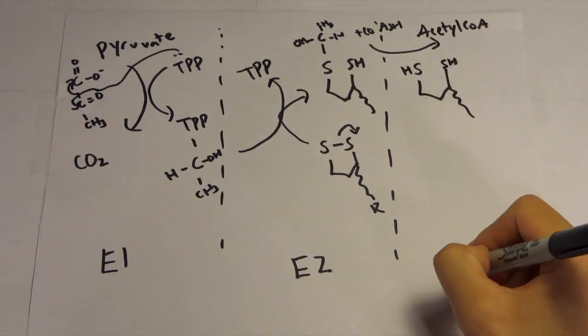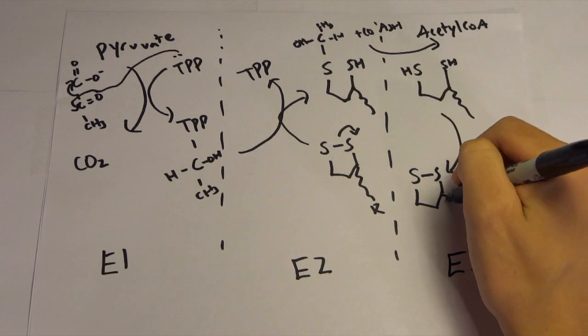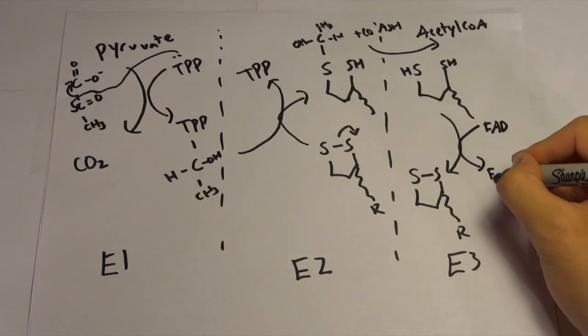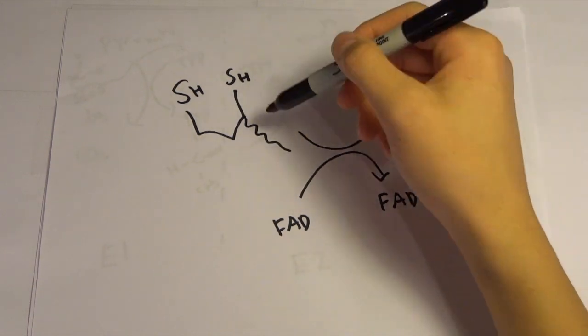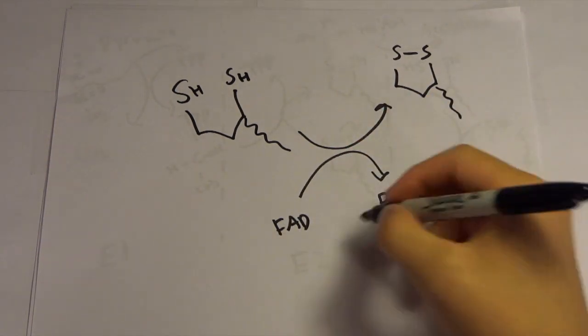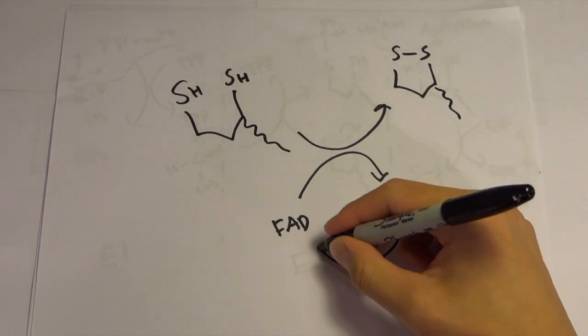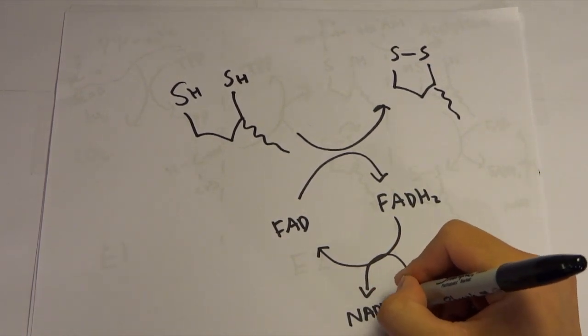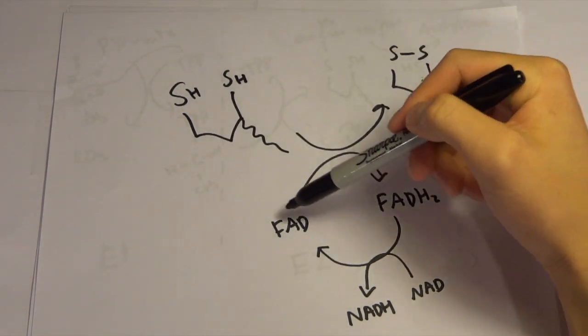And so for E3, we need to reform everything. So if you want to reform back into this SS like that, all we need to do is use FAD. FAD will go into FADH2. Because we are trying to oxidize this dihydrolipoyl into the lipoate, we use FAD as the oxidizing agent and it gets reduced. So it gets reduced to FADH2. But in order to reform this FADH2 to FAD, we're going to use NAD and it will go into NADH. So we see that our first goal was to reform this lipoate and then our second goal was to reform FAD.